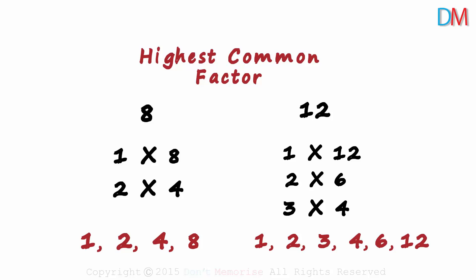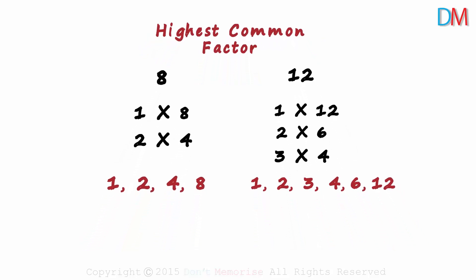In the first step, we found out the factors of each of the numbers. The next step is common. We look for common factors for each of the numbers. 1 is a factor common to both the numbers. 2 is also common, and 4 is common as well.